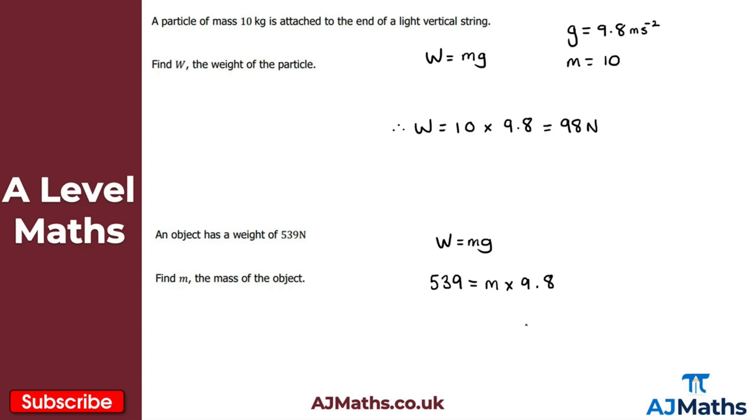So clearly if I just want m here I need to divide both sides now by 9.8. So m here is equal to 539 divided by 9.8. So you just need to put this into your calculator here. But if you do this correctly what you should get then is 55. And we're talking about the mass here so this would be kilograms. So 55 kilograms there. And there we have it. So that's the solution to the first two questions.